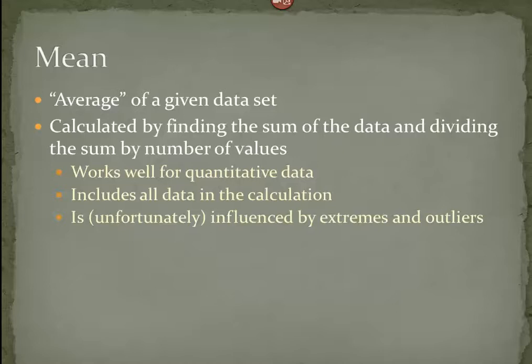For example, if I have a classroom of test scores and three or four students did not show up to take the exam, their scores would of course be a zero. Those zeros, if used as part of calculating the mean, will highly influence the mean outcome — pulling it toward the left and giving a very skewed result. My point in taking the scores was to find the average of those who actually took the test, so in this case those outliers highly influence the outcome of the mean.